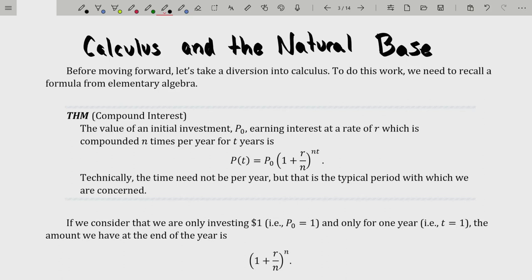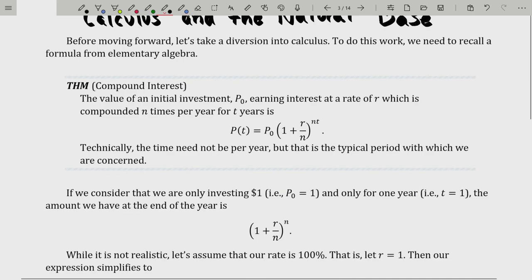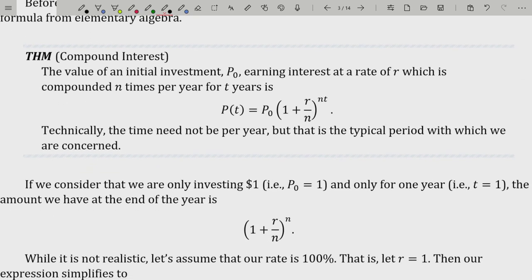Calculus and the natural base. Before moving forward, let's take a diversion into calculus. We need to recall a formula from elementary algebra: compound interest. The value of an initial investment P₀ earning interest at rate r, compounded n times per year for t years, is given by P(t) = P₀(1 + r/n)^(nt). Technically, the time need not be per year, but that is the typical period.